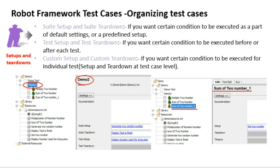Suite teardown executes only once, at the end — after all test cases in the suite have finished. People typically use suite teardown for cleanup activities: if your testing did some configuration via test cases and you want to bring the application state back to the desired state, you use suite teardown. Test setup and test teardown, on the other hand, execute at the beginning and end of every individual test case.